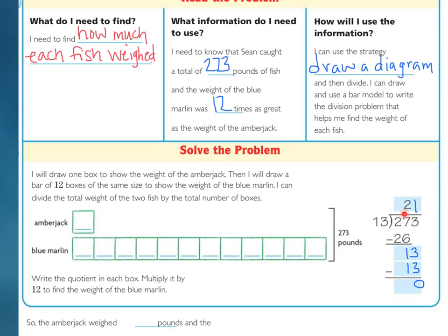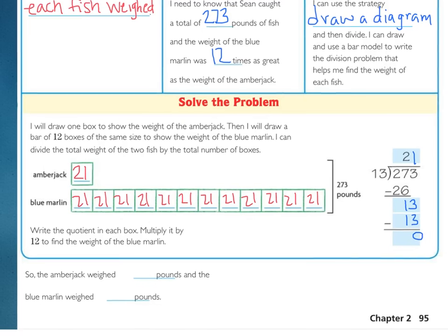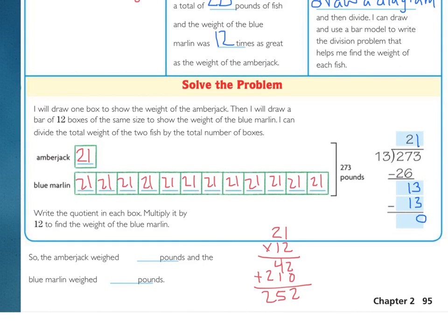Now, you write the quotient of 21 into the box of the amberjack because that is our one box. Now, that we know that the amberjack is 21 pounds, we know the blue marlin is 12 times that 21. So, you can write 21 in each of the boxes. The best way to find it would be to actually multiply 12 times 21. Go ahead and press pause and do that multiplication. So, the amberjack weighed 21 pounds, and the blue marlin weighed, you should have ended up with 252.